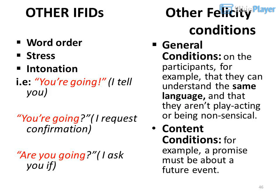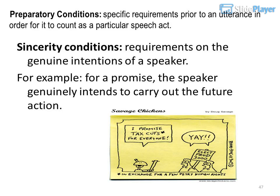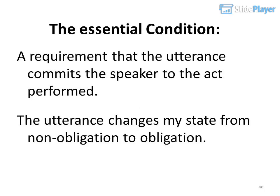Other felicity conditions include: word order, stress, and intonation — for example: 'You're going' as a statement, 'You're going?' as a request for confirmation, 'Are you going?' as a question. General conditions on the participants — for example, that they can understand the same language and aren't play-acting. Content conditions — for example, a promise must be about a future event. Preparatory conditions — specific requirements prior to an utterance. Sincerity conditions — requirements on the genuine intentions of a speaker. The essential condition: the utterance commits the speaker to the act performed.